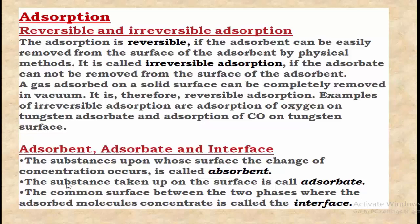The first concept in surface chemistry is adsorption, which is a surface phenomenon. There are two types: reversible and irreversible adsorption. Adsorption is reversible if the adsorbate can be easily removed from the surface of the adsorbent by physical methods. If the adsorbate cannot be removed from the surface of the adsorbent, it is called irreversible adsorption.